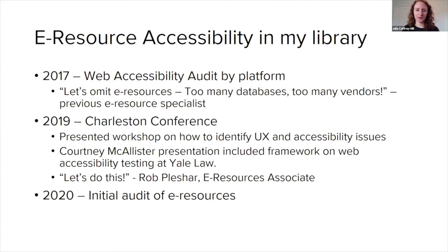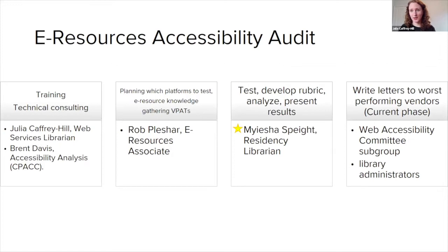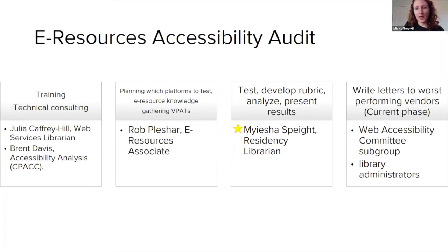There I saw a great presentation where Courtney McAllister included a framework on how to scale up web accessibility checks for eResources — way more scalable, being done at Yale Law. Rob Pleasure, our current eResources specialist who is very interested in accessibility, turned to me and said let's do this. So in 2020, we did an initial audit of our eResources, and it really took many people across the team to achieve that. I did the training with support from our university's certified accessibility analyst, Rob's expertise gathering VPATs from vendors, our residency librarian doing the bulk of testing and developing a rubric, and now working at committee level to write letters and share our data.